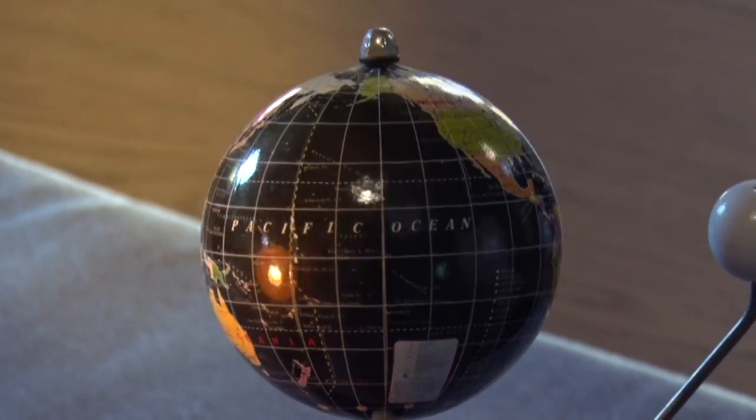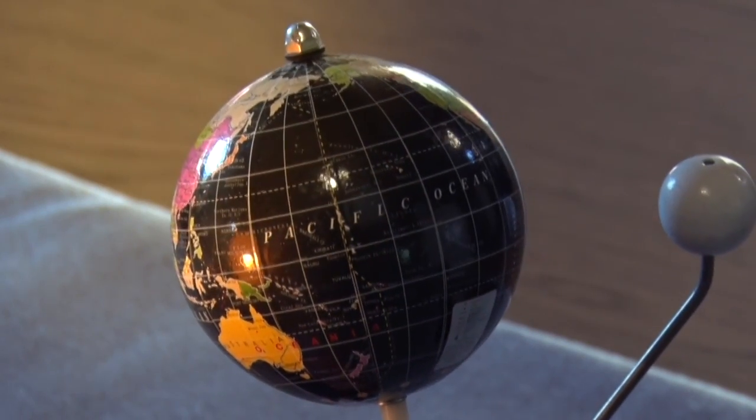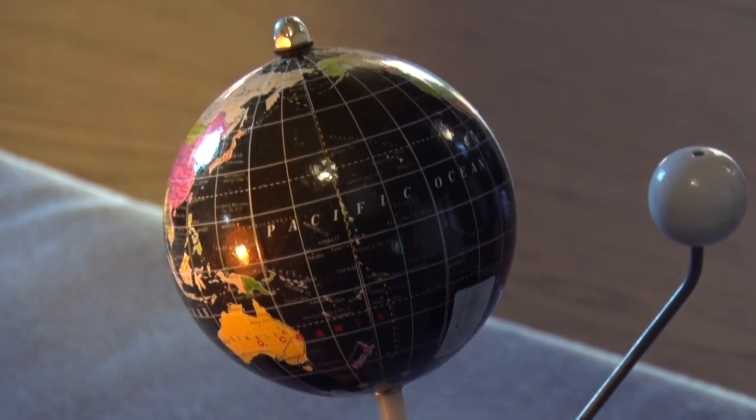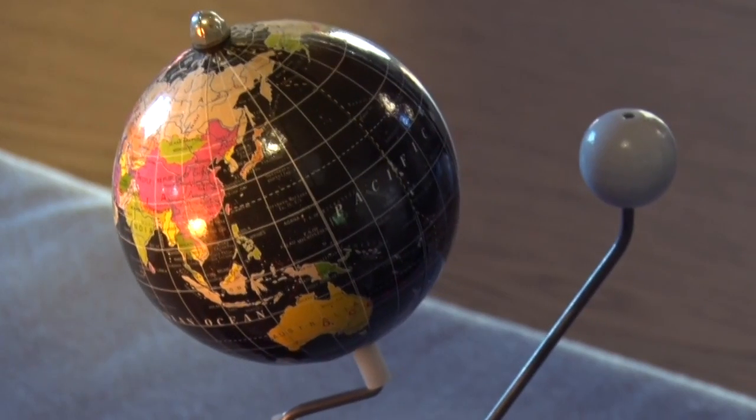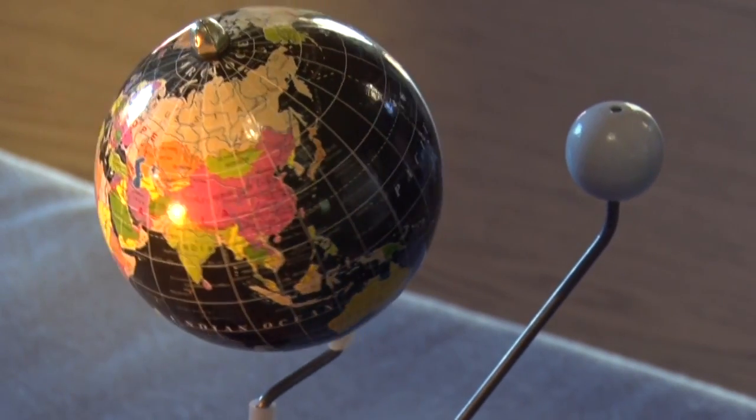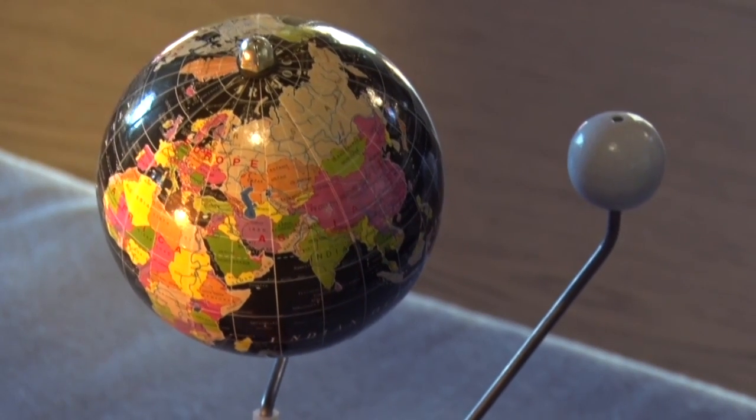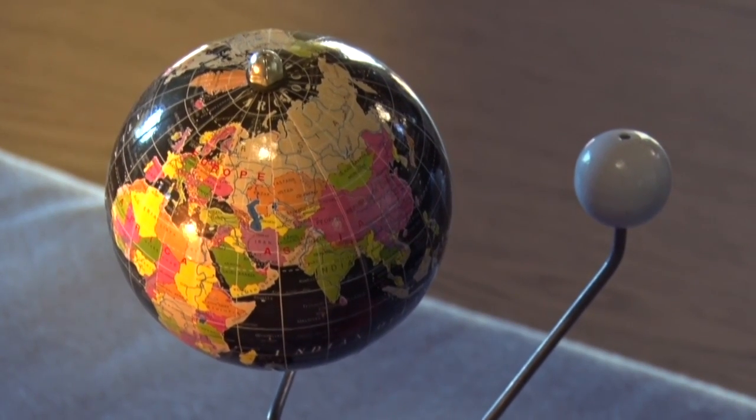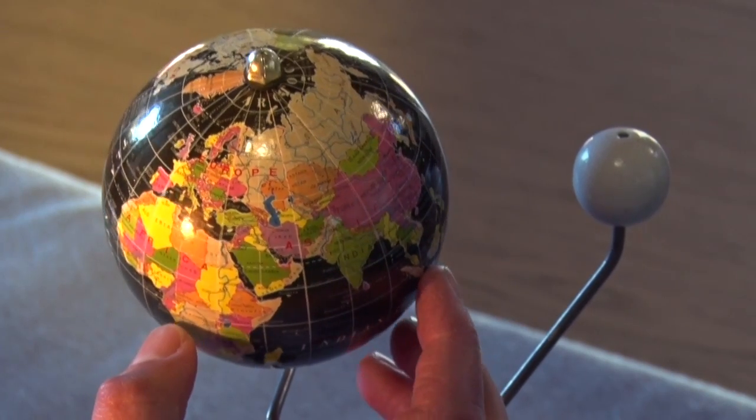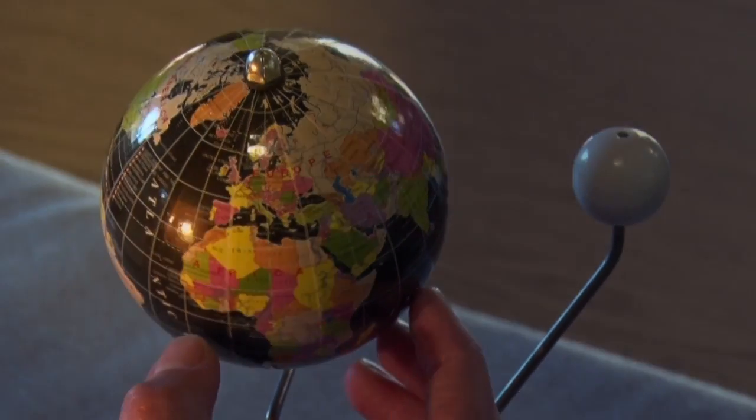If I move so that we have summer in the Northern Hemisphere, and then ask the students to observe again what's happening at the North Pole, they would observe that the sun never sets at this time of the year in the North Pole, and that they have sunlight almost all day and all night.